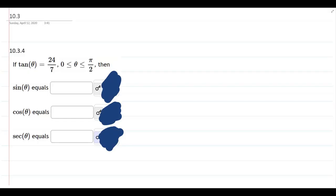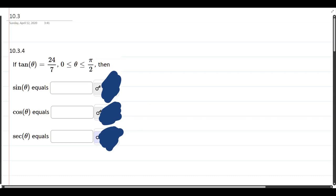We're given the value of tangent and also a lot of information about theta. Theta is between zero and pi over two, so this tells us theta is in quadrant one.